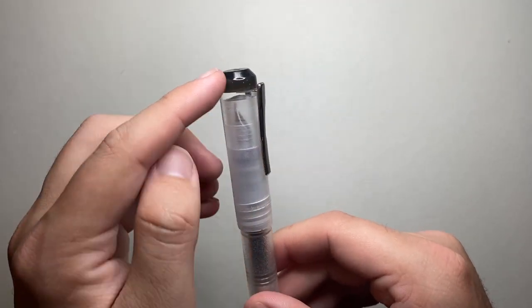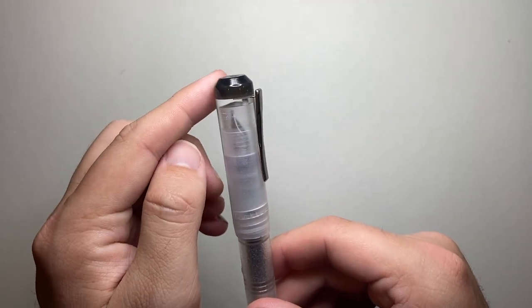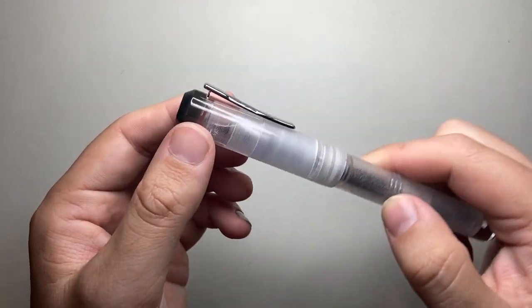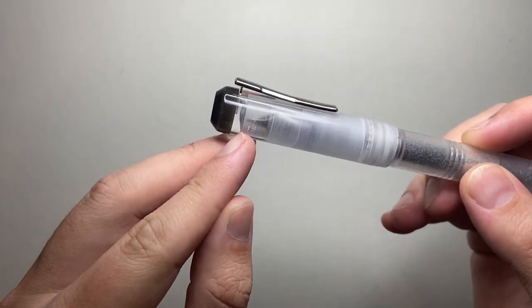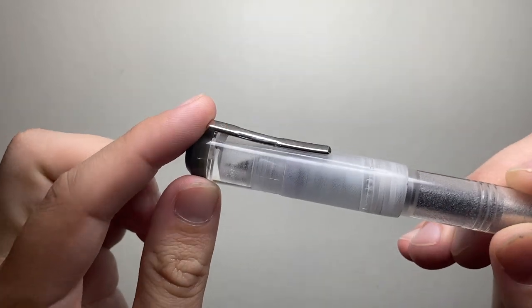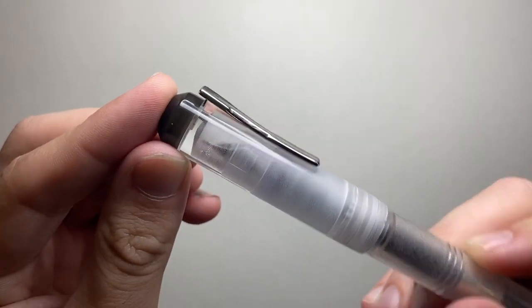These beveled edges are a typical feature on Franklin Kristoff pens. Then we get this split in the cap and the clip is inserted in there held in with a little screw.